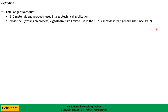Cellular geosynthetics can be closed cell foams created in some type of expansion process — these are what we call geofoams. The word geofoam was actually a proprietary name in the 1970s, referring to a specific manufacturer's material used on the Alaska pipeline built in the 1970s. However, the term geofoam is now generic and has been in widespread generic use since at least 1992 — that's when I independently coined the term. I only learned about the earlier use of geofoam well after 1992.